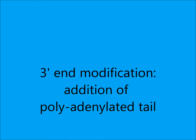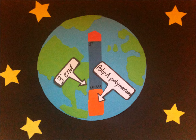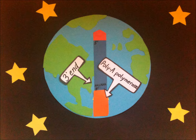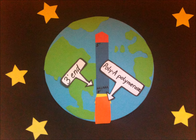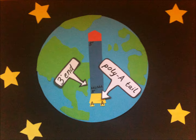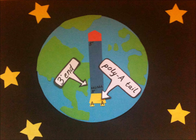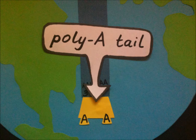Now we will look at the second part of processing: modification of the 3' end. After cleavage, poly-A polymerase recognizes the AAUAAA signal and begins the process of polyadenylation. It adds about 200 adenylate residues to the free 3' hydroxyl end of the mRNA. The addition of a poly-A tail is very important as it protects the 3' end against degradation by 3'-5' exonucleases, and it also labels the mRNA for nuclear and ribosomal recognition, helping the ribosome attach to the 5' end of the mRNA once it reaches the cytoplasm.